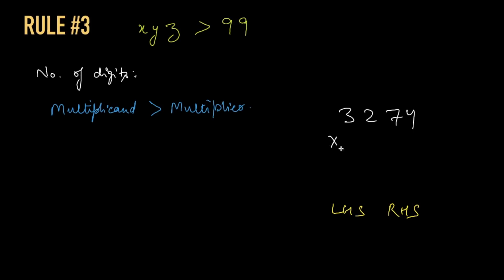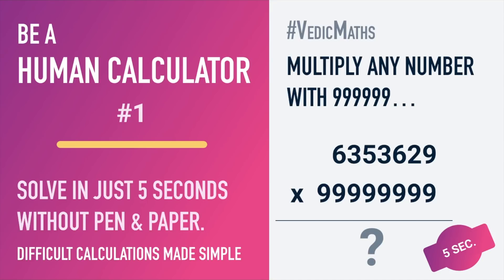Let's say 3274 into 99. Again we'll see the number of digits in the multiplier, which is 2. We'll count 2 digits from the units place, and as soon as 2 digits are complete, we'll break this number. After breaking, we get 2 parts of the multiplicand. We'll add 1 to 32, so the answer would be 33. And we'll subtract this whole 33 from 3274. So we'll get 3241. This is our LHS. Now finding RHS is very easy. We'll have to take the complement of 74, which would be 26. So the answer would be 324126.